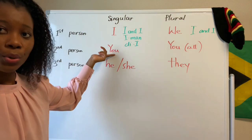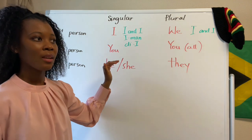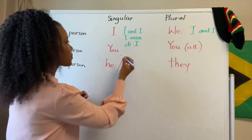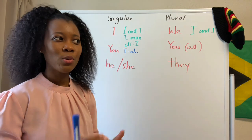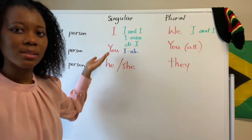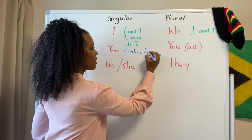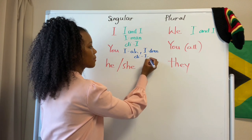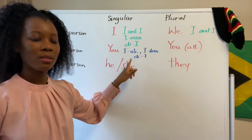Let's get to the second person singular. In English, 'you.' In Rastafarian speech, we would say 'Iya.' Now, 'Iya' is used when you're talking directly to the person. So 'you' becomes 'Iya' or 'Iydren.' The 'Iya' is used here as well, so second person singular 'you' becomes 'Iya,' 'Iydren,' or 'DI.'